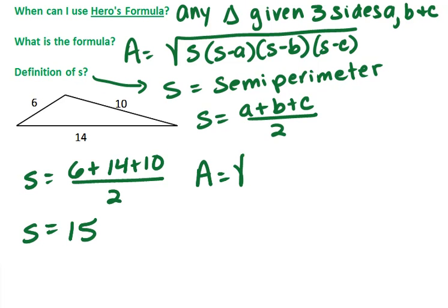Now to find the area of the triangle, we put S, 15, times S minus the first side. And it doesn't matter where you start. 15 minus 6 is 9, 15 minus 10 is 5, 15 minus 14 is 1.